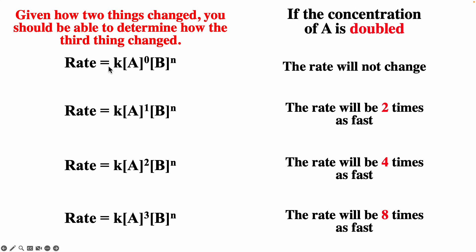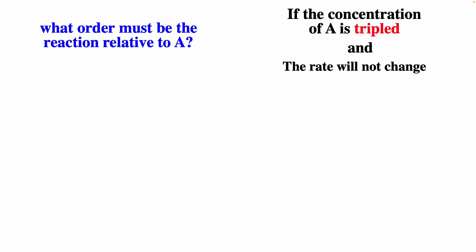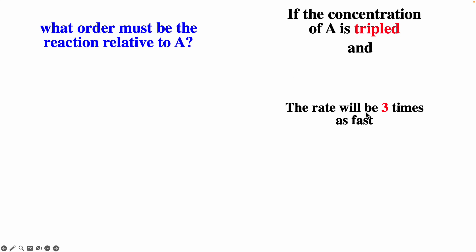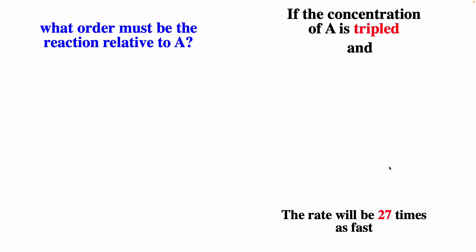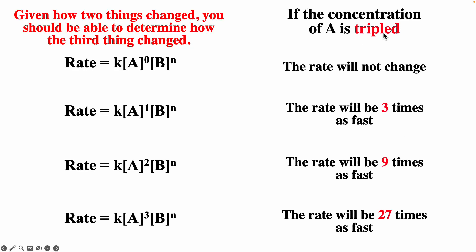You should also be able to go from change in concentration and change in rate back to the rate law. If the concentration is tripled with no change in rate, that's zero order. If tripled and rate is three times as fast, that's first order. If tripled and nine times as fast, second order. If tripled and 27 times as fast, that's third order with respect to A.